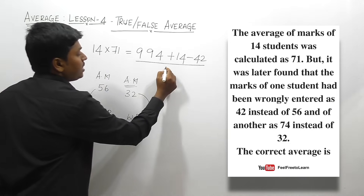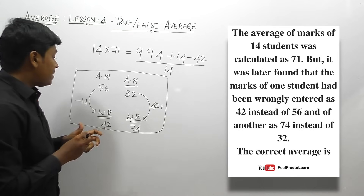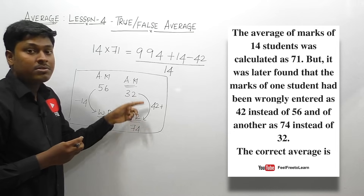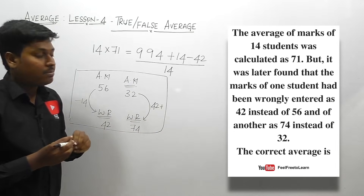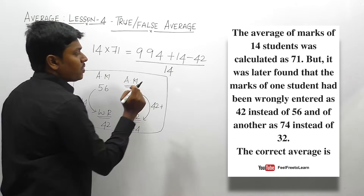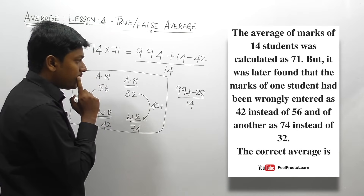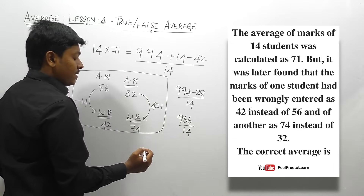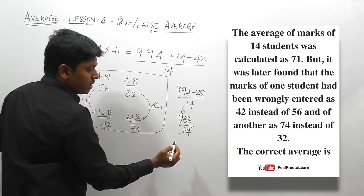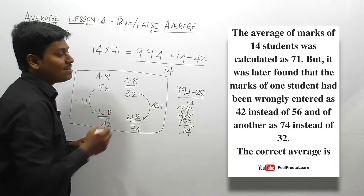The key step is identifying whether to add or subtract based on whether the wrong reading was less or more than the actual mark. 994 + 14 − 42 = 994 − 28 = 966. Then 966 ÷ 14 = 69. The correct average for the 14 students is 69.